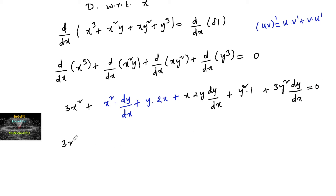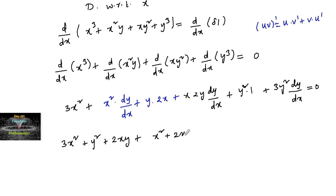Collecting the constant terms: 3x² plus y² plus 2xy. The dy/dx terms are: x² plus 2xy plus 3y², all multiplied by dy/dx, equals zero.